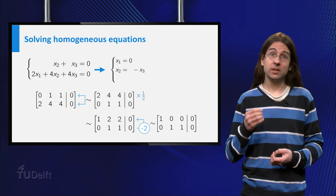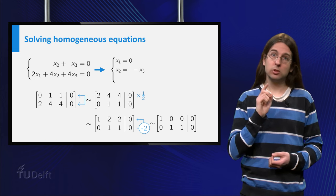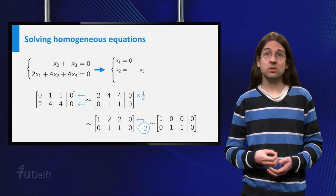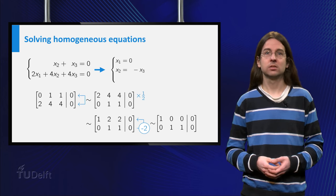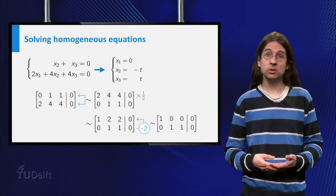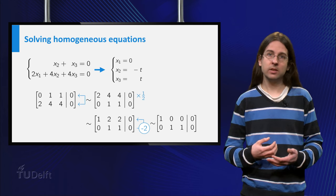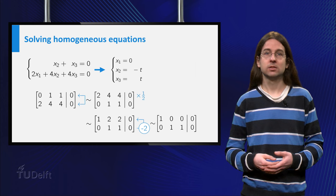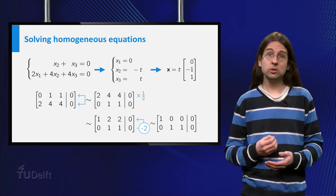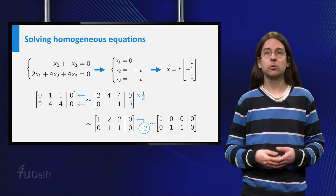Finally, each column that has no pivot, as the third column in this example, corresponds to a free variable. Hence, in this case there are infinitely many solutions. To obtain the general expression for the solution, we set the free variable x3 equal to a parameter t and plug that in the other equations. In this case the solutions are multiples of a single vector and thus form a line through the origin.